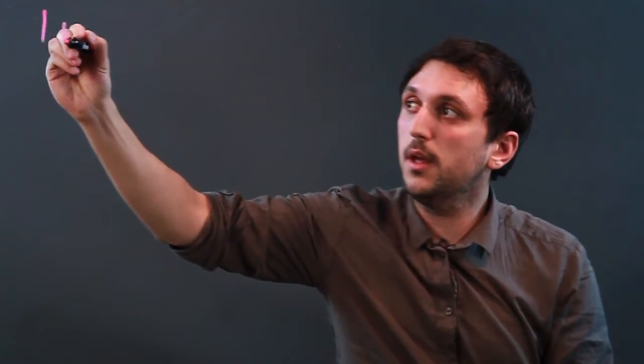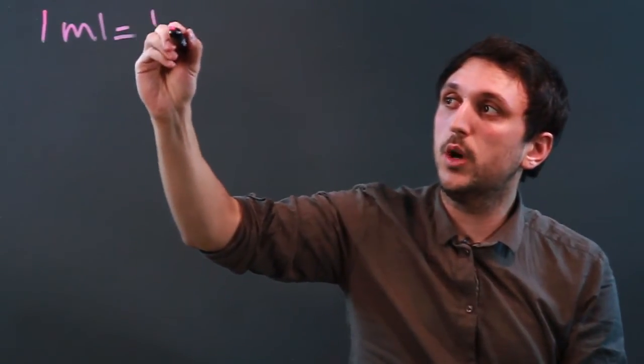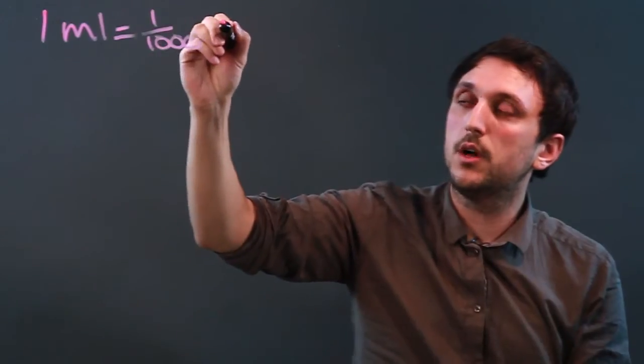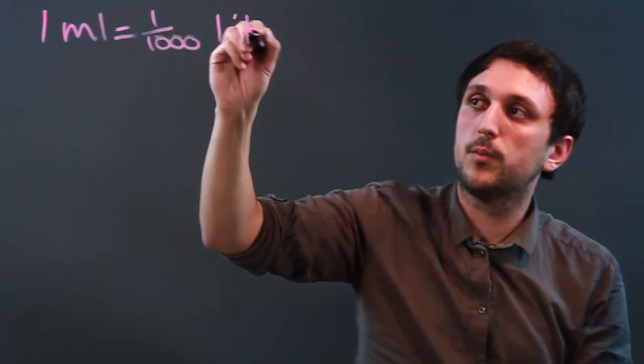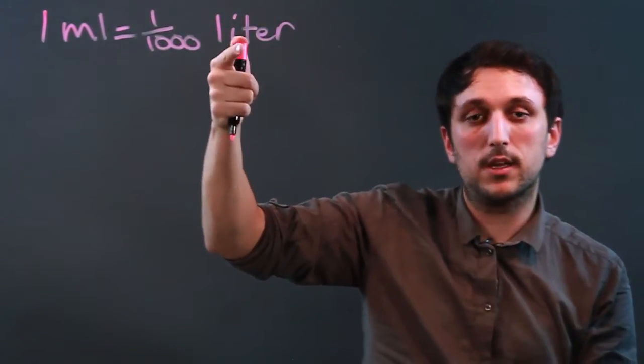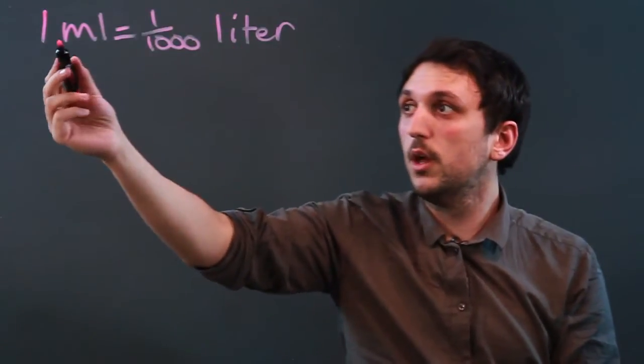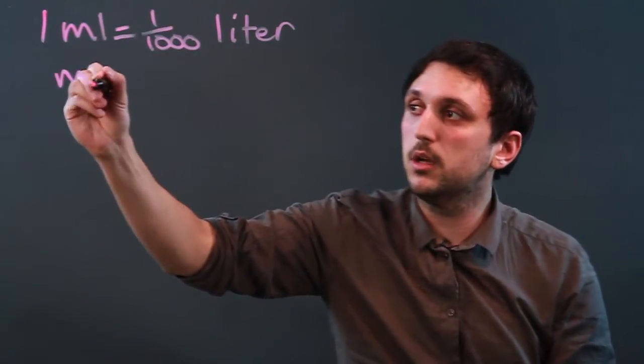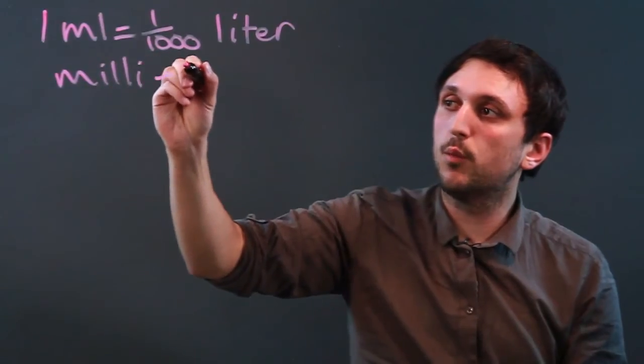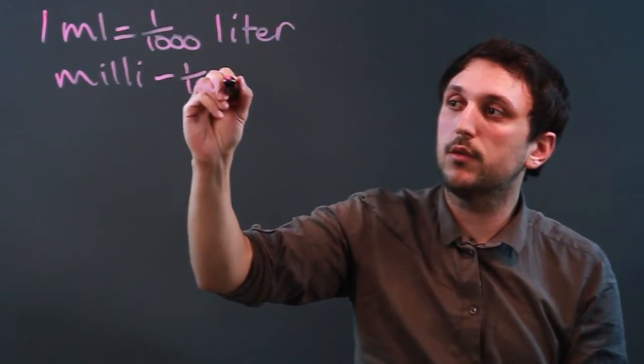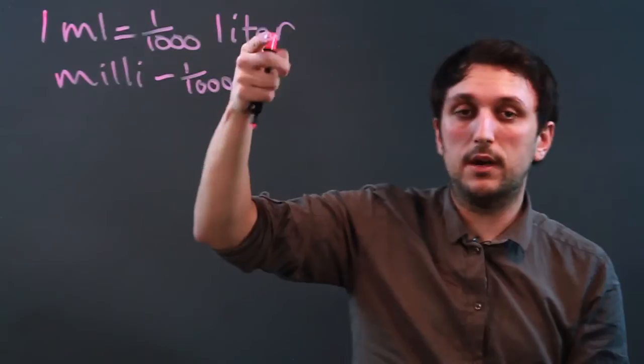Well, a milliliter is part of the standard units of metric measurement where we say one ml equals one one-thousandth of a liter. A liter is the basic unit of measurement of volume in the metric system. So one milliliter, milli means one one-thousandth. So one one-thousandth of a liter.